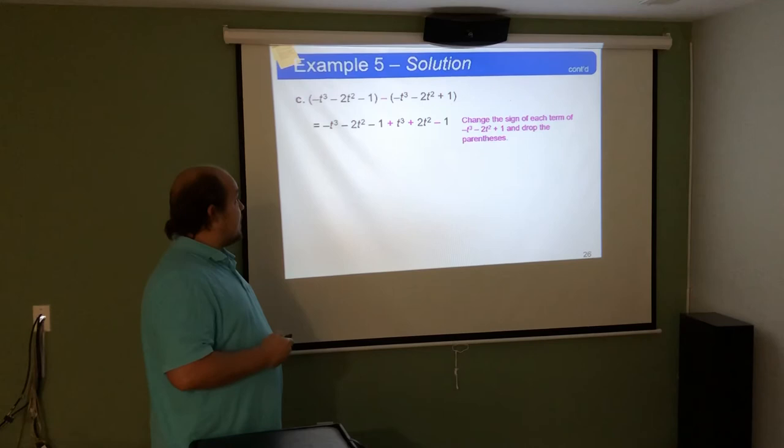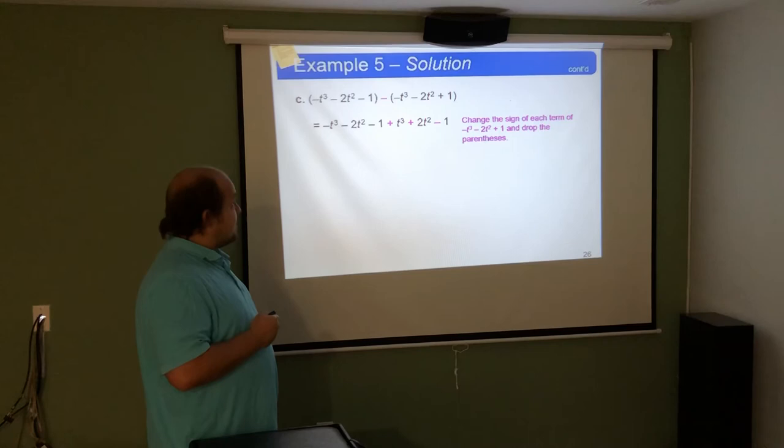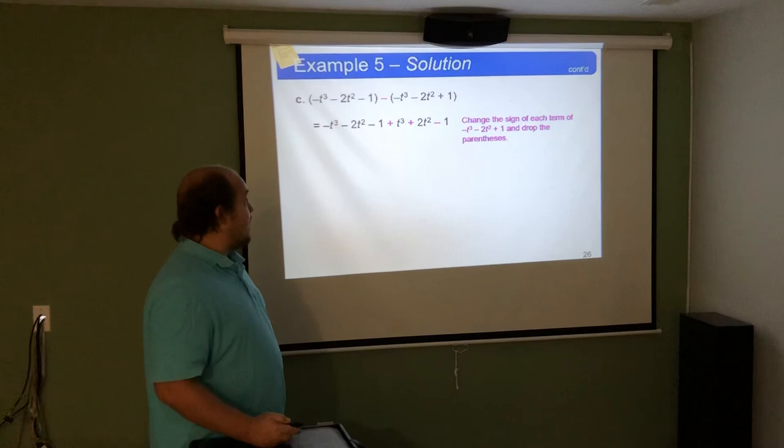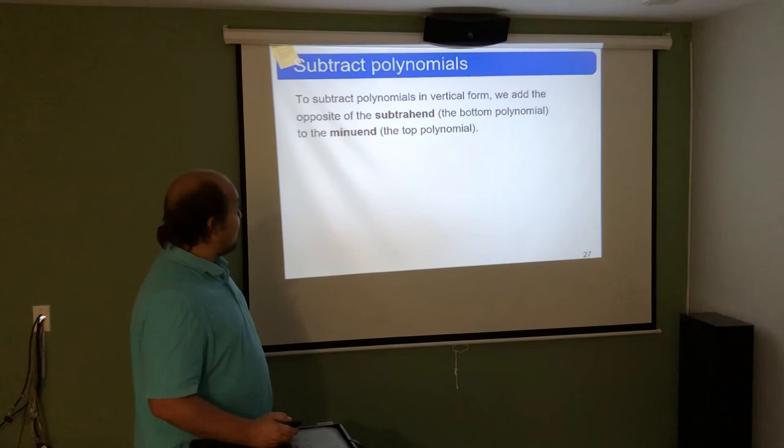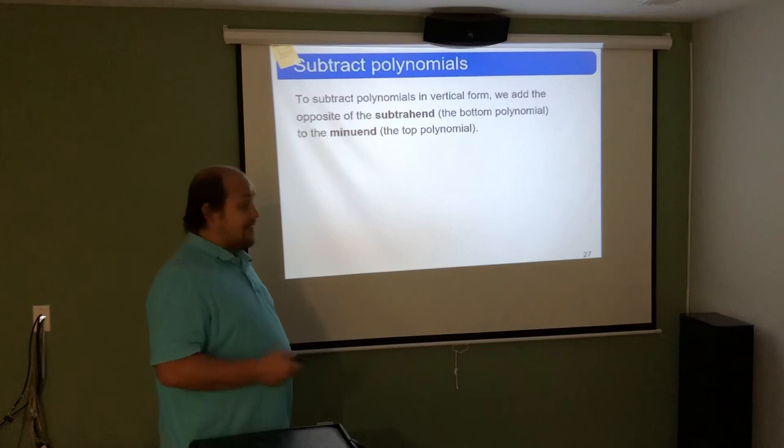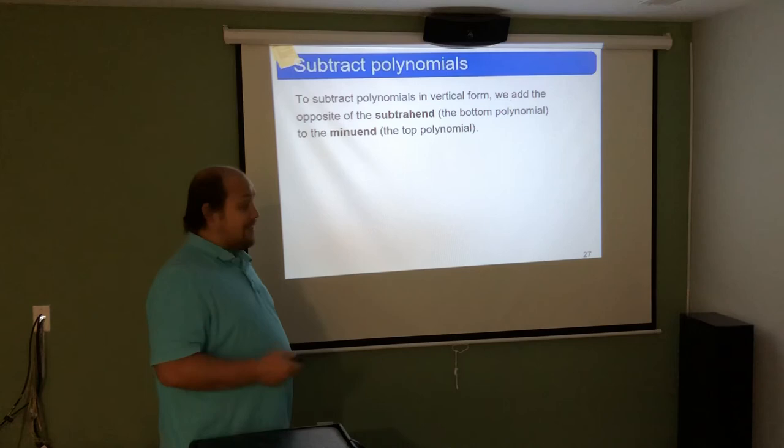For the third subtraction problem, after applying the negative, positive t cubed and negative t cubed cancel, positive 2t squared and negative 2t squared cancel, and the two negative 1 constants combine to give negative 2. When subtracting polynomials in vertical form, switch the signs on the bottom polynomial so they all become the opposite sign, and then combine like terms.